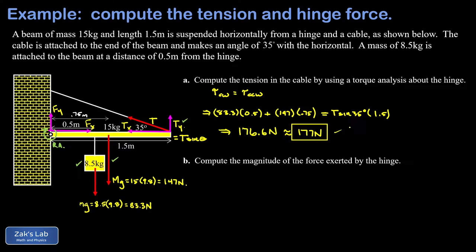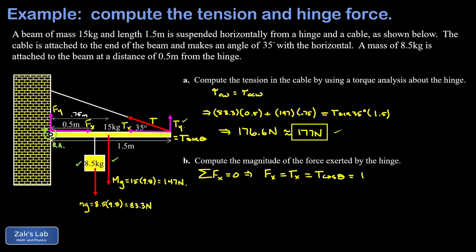For part B, we want the magnitude of the force exerted by the hinge. We find each component using force equilibrium, then apply the Pythagorean theorem. In the x direction, the only rightward force is Fx and the only leftward force is Tx, so Fx equals Tx equals T cosine theta. Plugging in 176.6 times cosine 35 degrees gives us 144.6 newtons for the horizontal component.